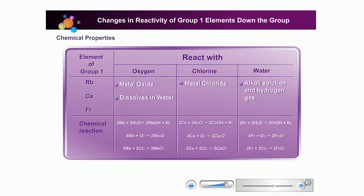Rubidium, cesium, and francium react with chlorine to form a metallic chloride. Rubidium, cesium, and francium react with water to produce an alkali and hydrogen gas.